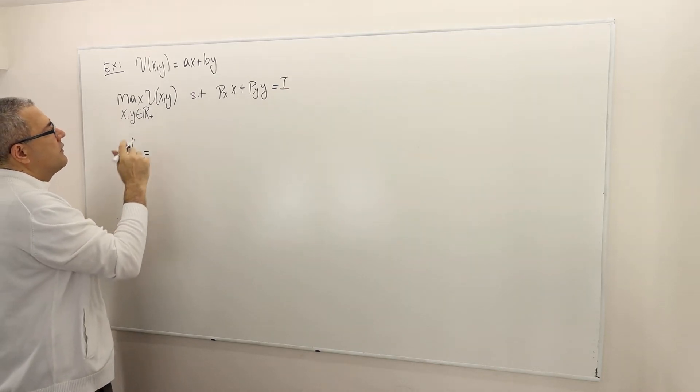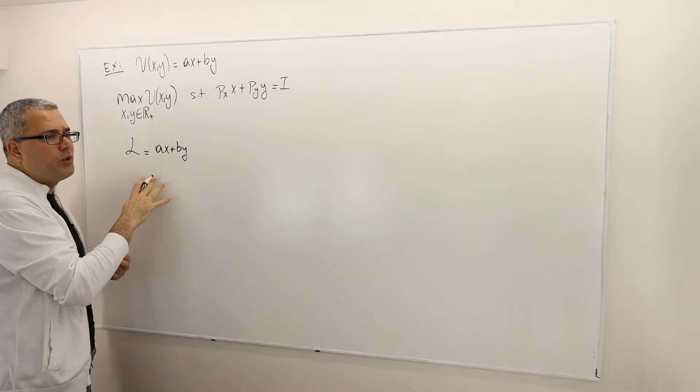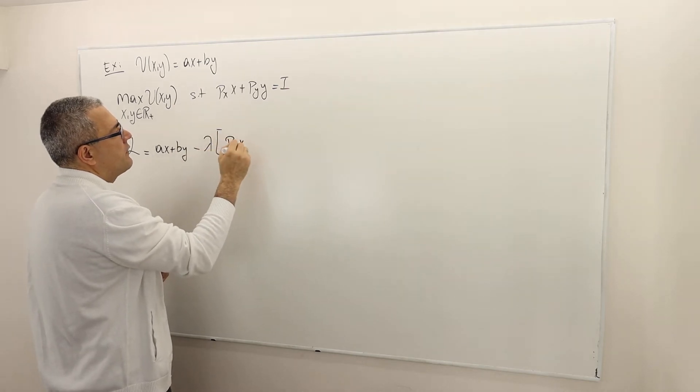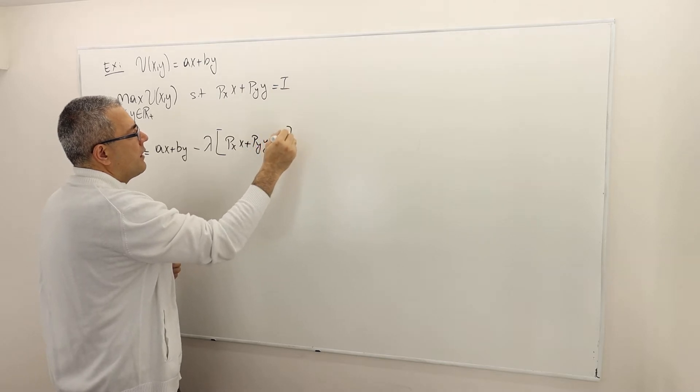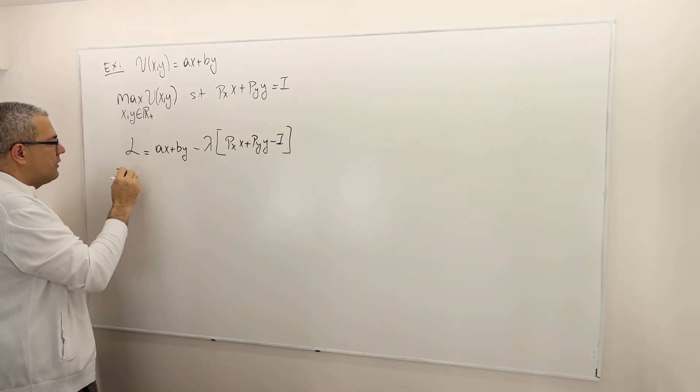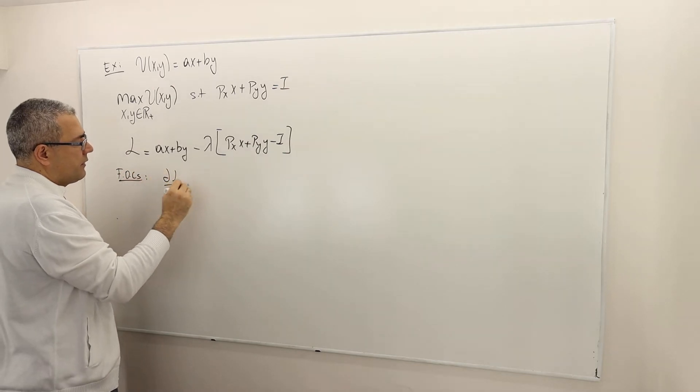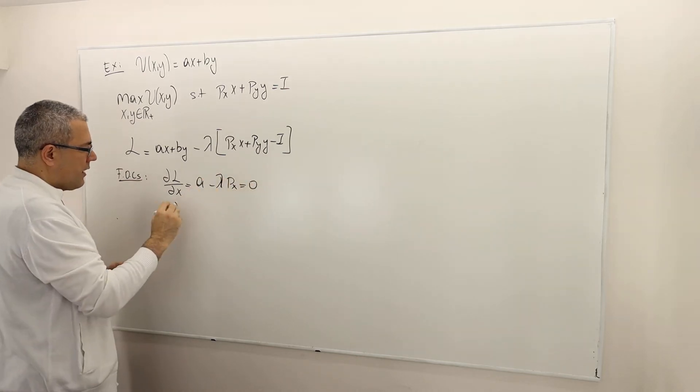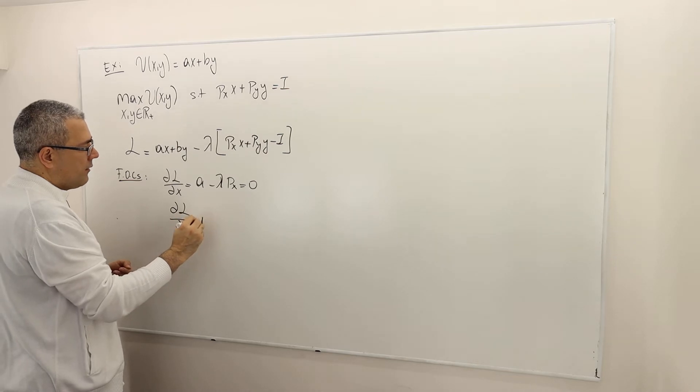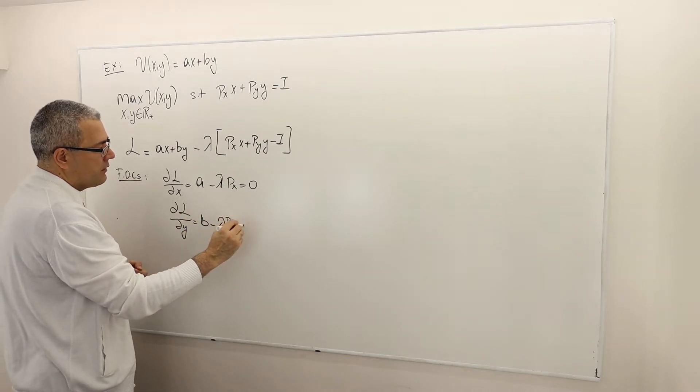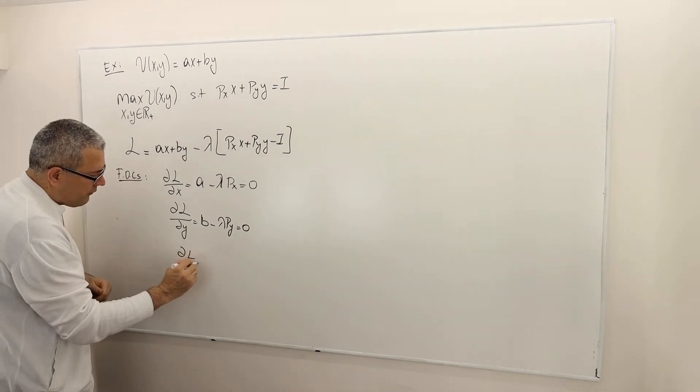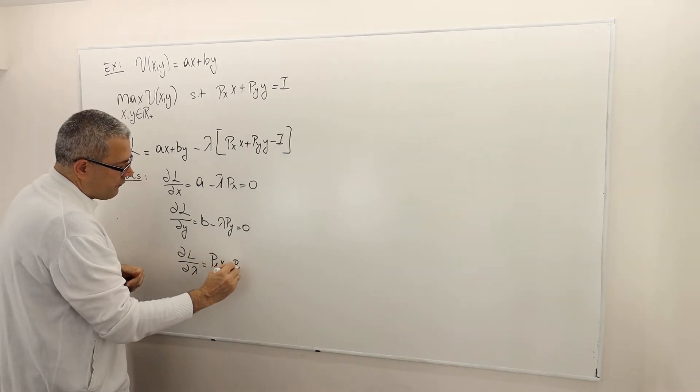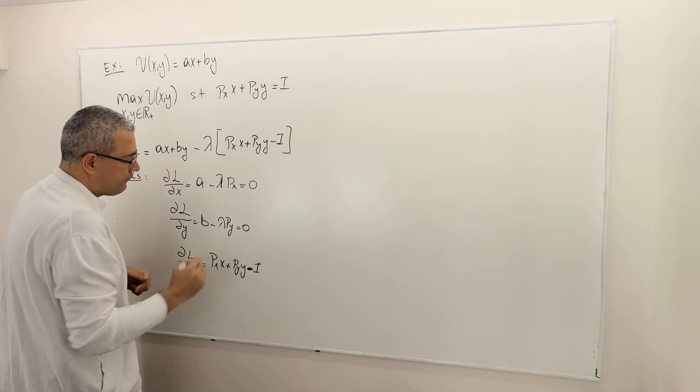So the Lagrangian is the objective function AX plus BY. I just want to show you that this is not going to work. Minus lambda times the constraint, which is PX*X, PY*Y minus income. The first order conditions are: partial derivative with respect to X is A minus lambda PX equals zero, and del L del Y, B minus lambda PY equals zero, and with respect to lambda I just get my budget constraint minus income equals zero.